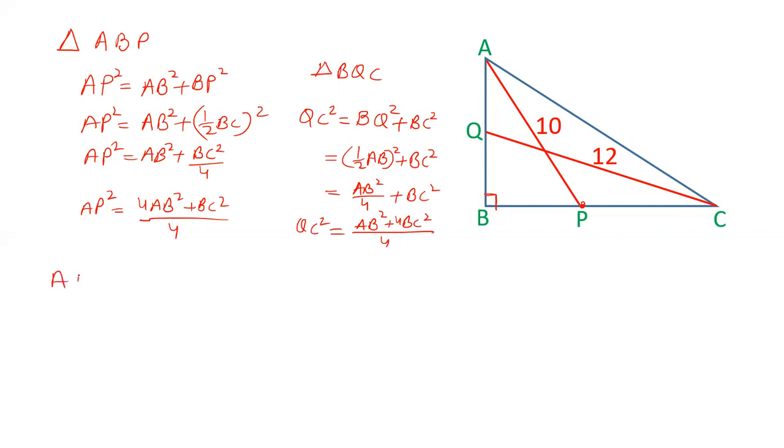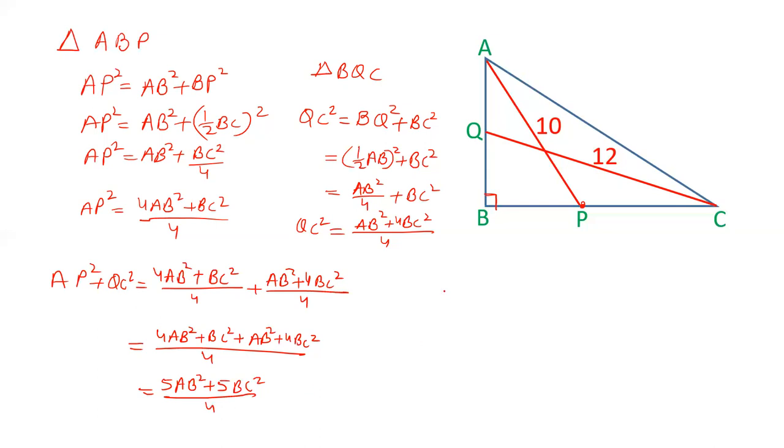Now add this. AP square plus QC square equals 4AB square plus BC square upon 4 plus AB square plus 4BC square upon 4. This gives us 4AB square upon 4 plus AB square, which is 5AB square. BC square upon 4 plus 4BC square is 5BC square upon 4.